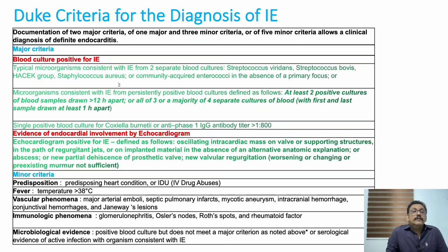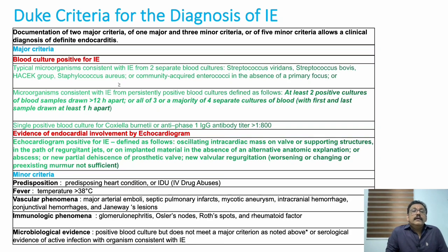Other minor criteria include high-degree fever more than 38°C, major arterial embolism, septic pulmonary infarct, mycotic aneurysm, intracerebral hemorrhage, conjunctival hemorrhage, Janeway lesions, immunological phenomena like glomerulonephritis, Osler's nodes, Roth spots, rheumatoid factor positivity, and microbiological evidence like positive blood culture. Most importantly, clinical suspicion plus positive blood culture plus echocardiographic evidence is required for diagnosis.